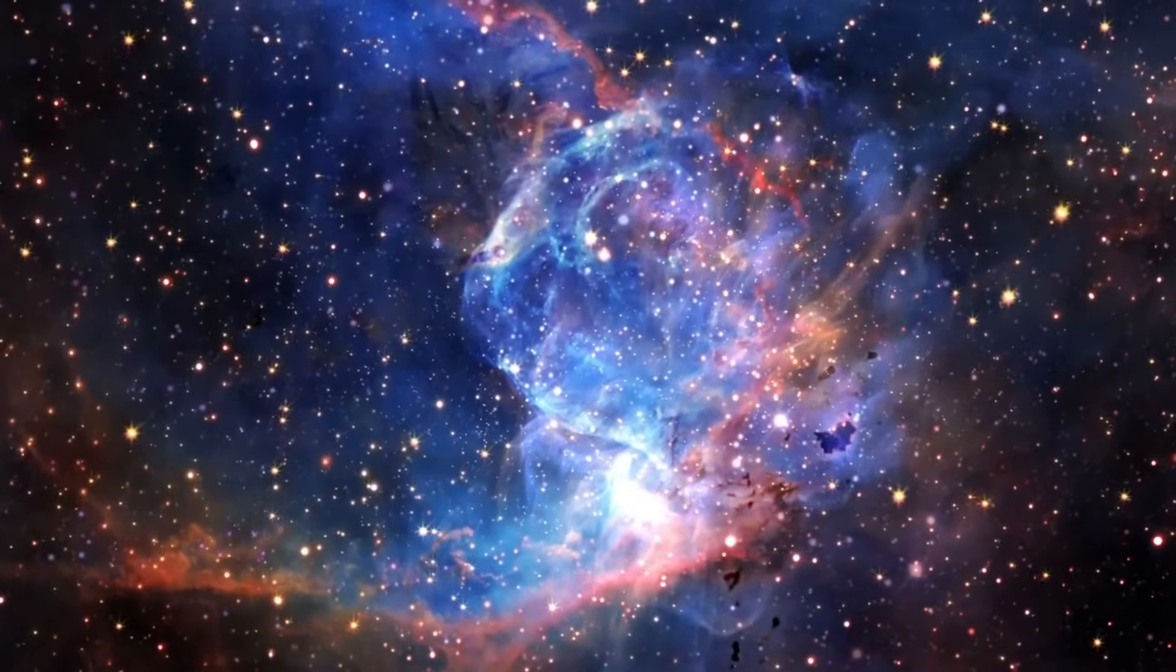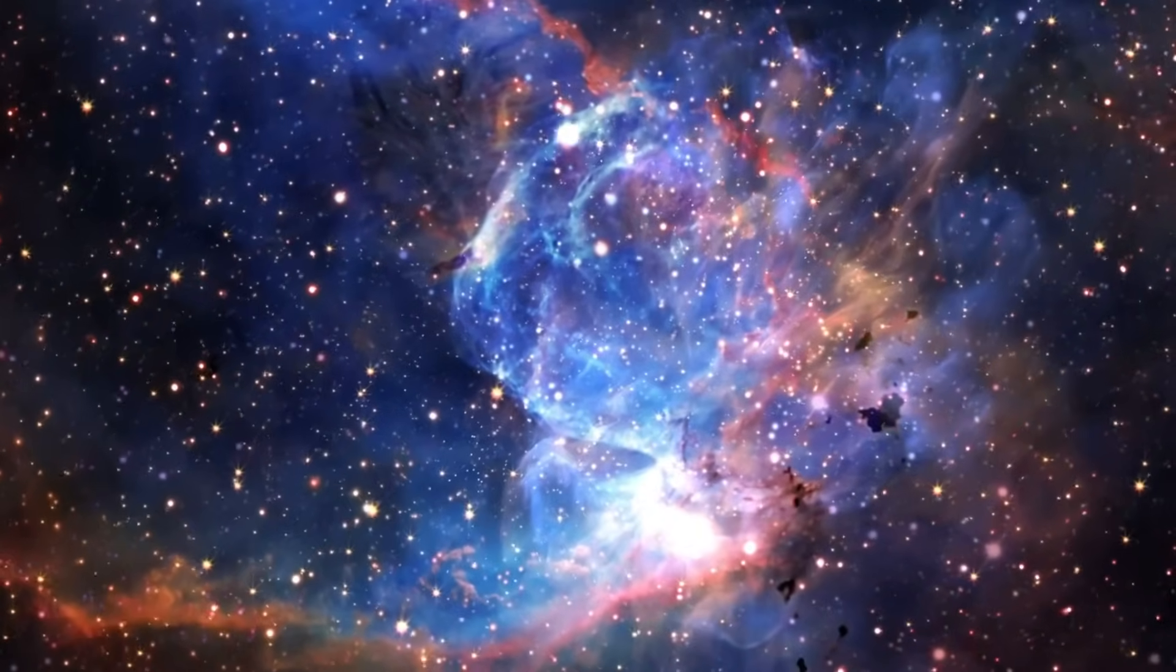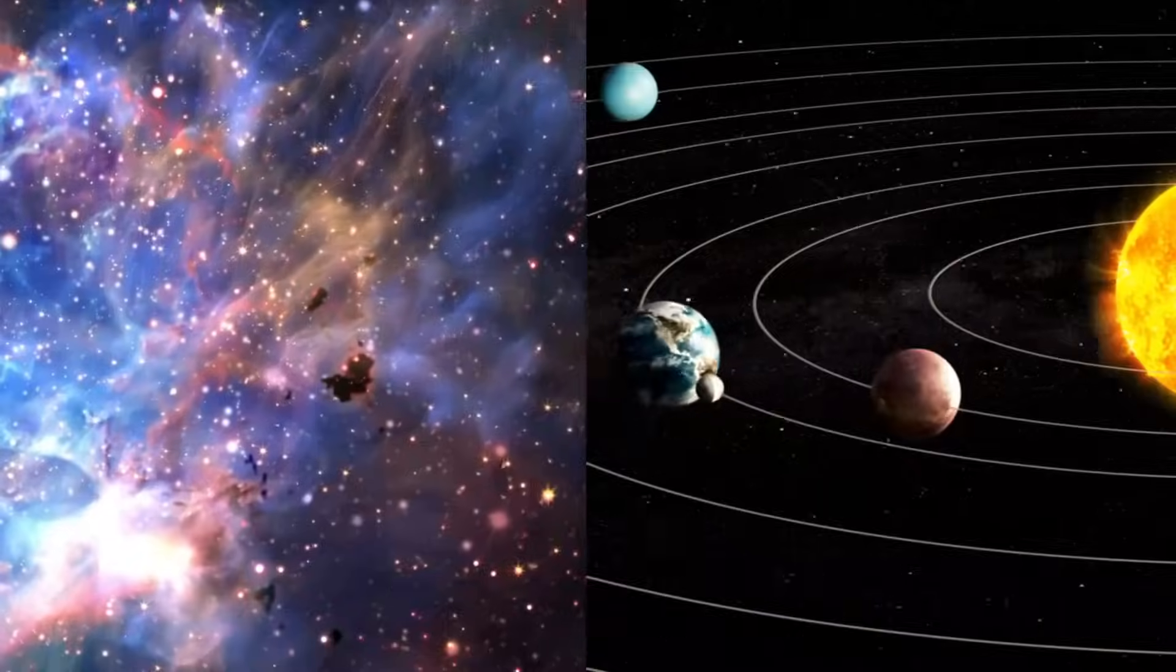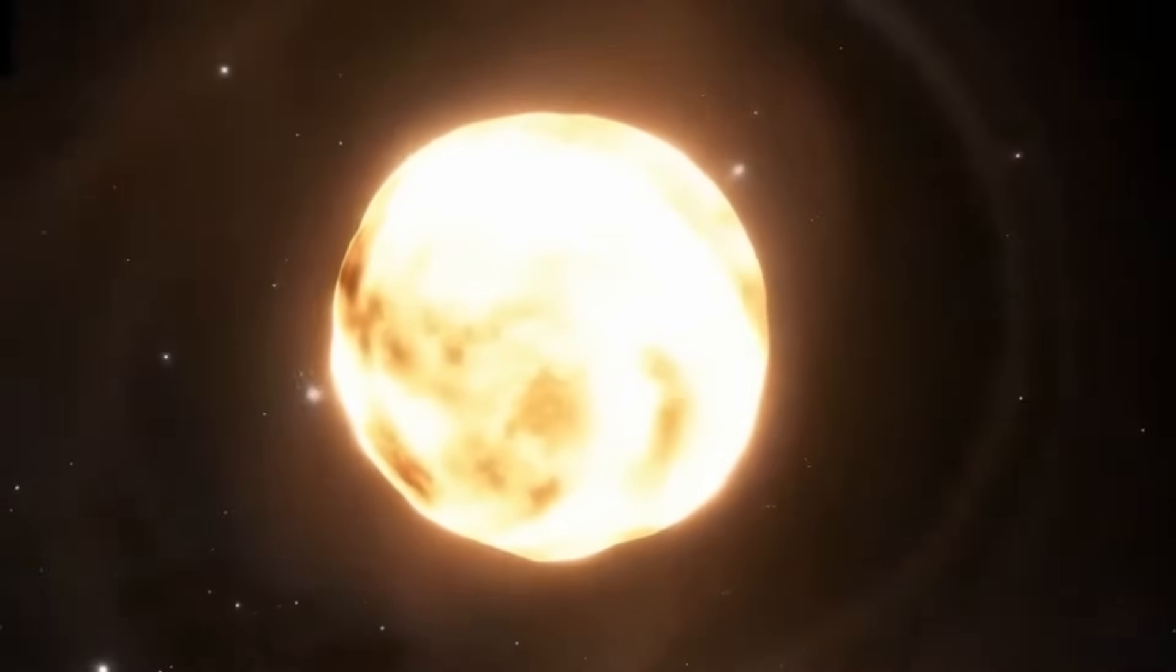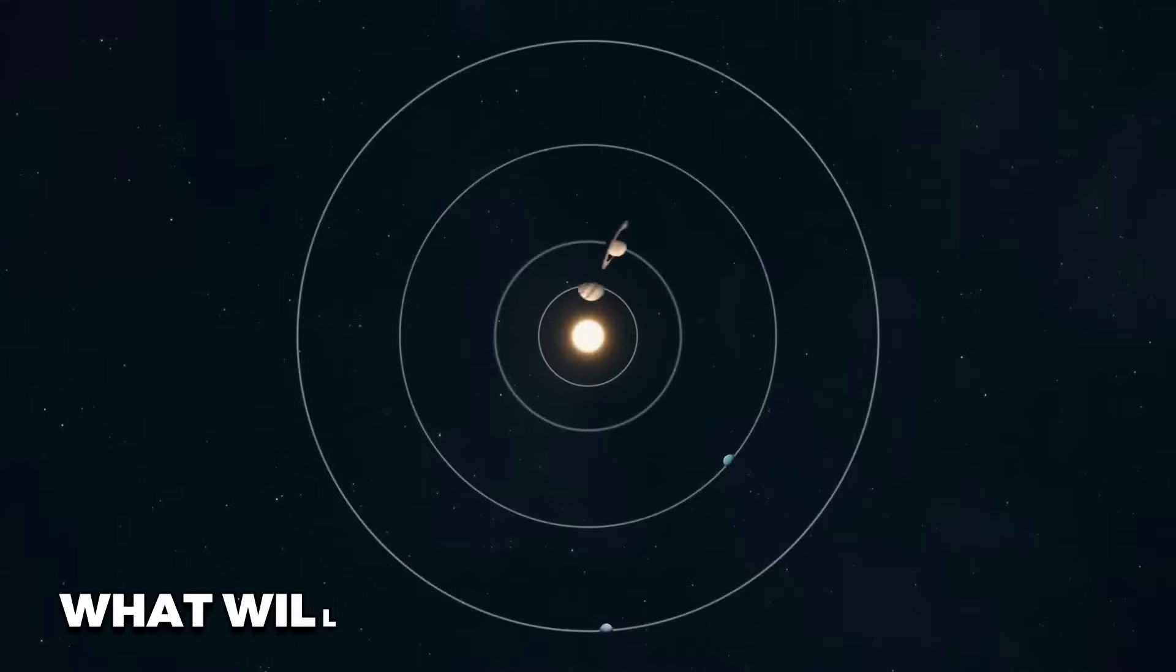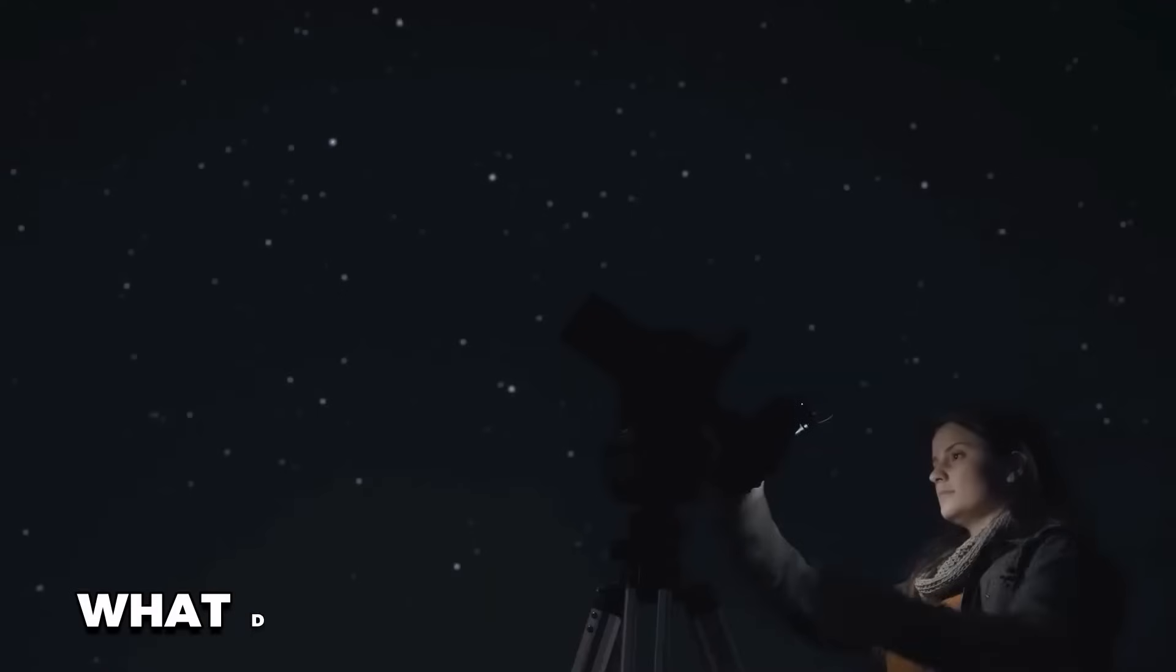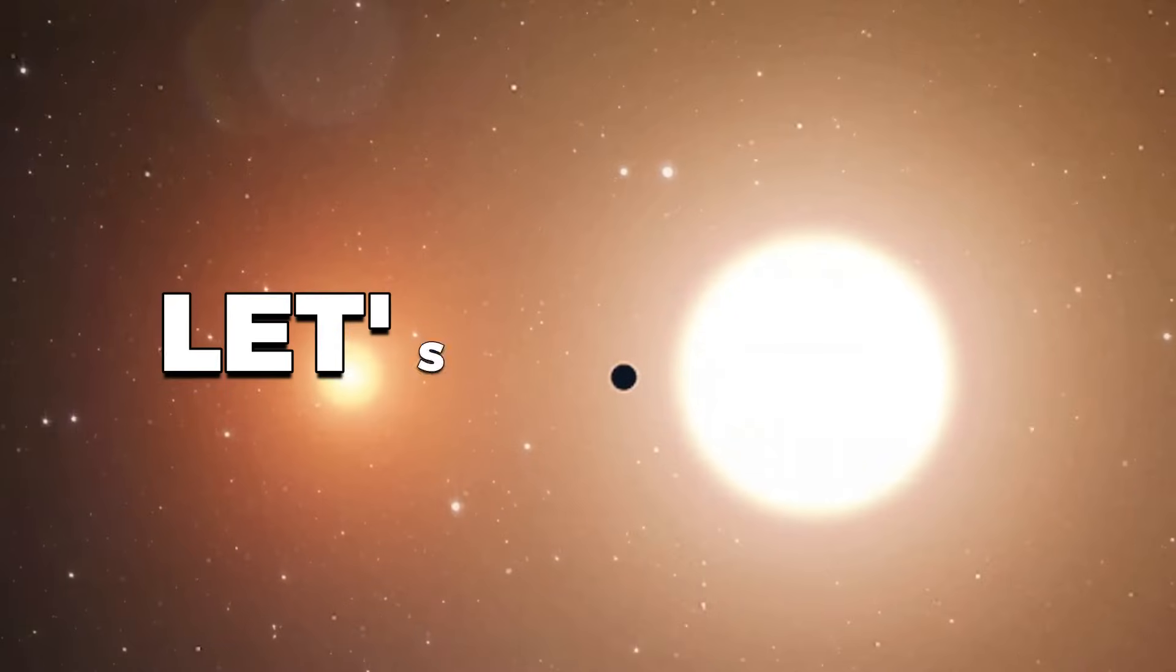The James Webb Space Telescope recently found something strange in space that might put our star and the whole solar system at risk. People say that Betelgeuse, a very large star, is about to explode in a supernova. What will happen to our planet then? What does the world need to know? Let's find out.